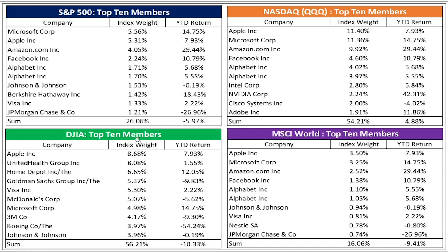The Dow Jones Industrial Average's top 10 account for 56% — very similar to the NASDAQ. And the MSCI World, which has something like 1,200 companies in it, has a top 10 — mainly US-based firms — that account for 16%. That's our first indication that diversification is far less effective because these indices are really being dominated by the mega caps right now. The mega caps are just destroying diversification — the index goes up when the mega caps go up, and it goes down when they go down.